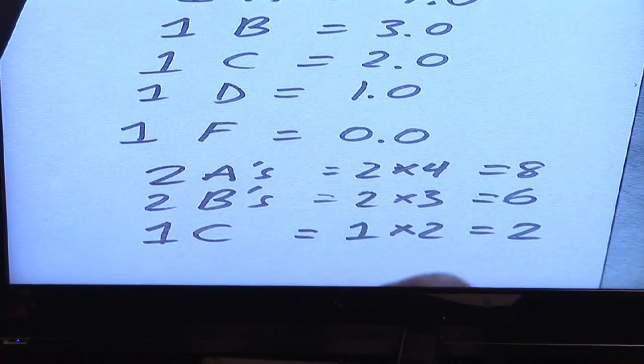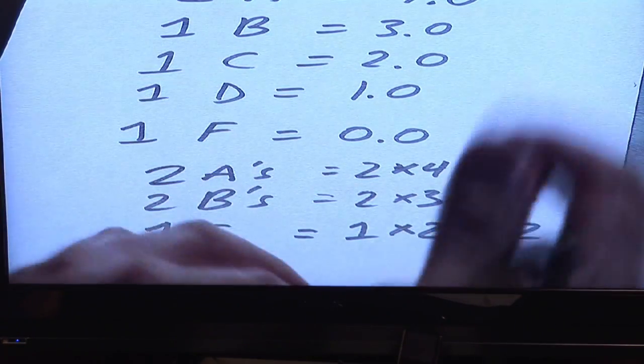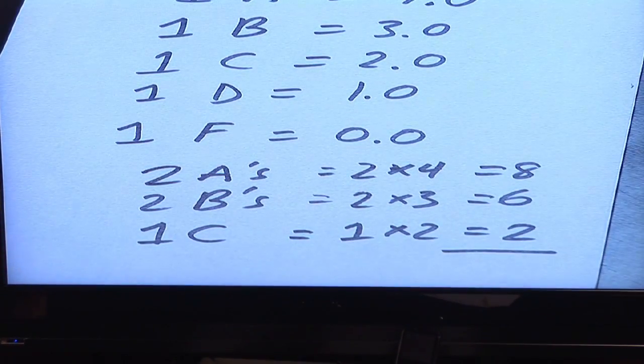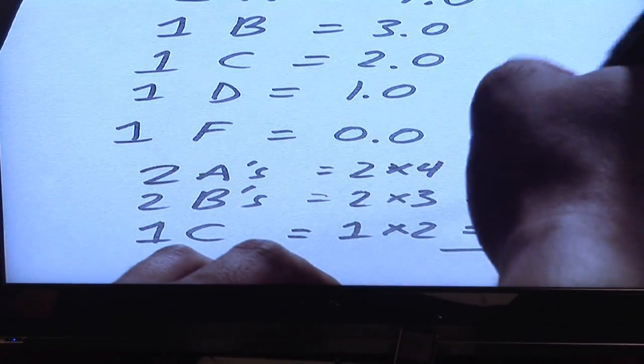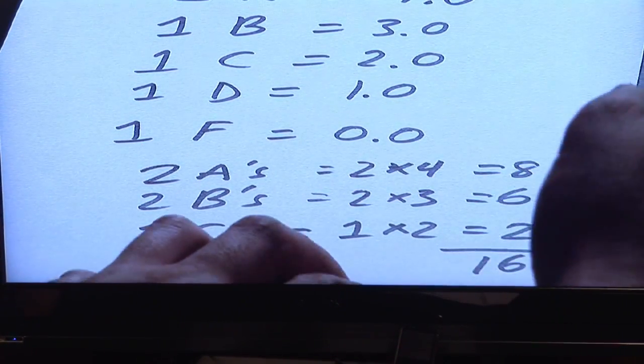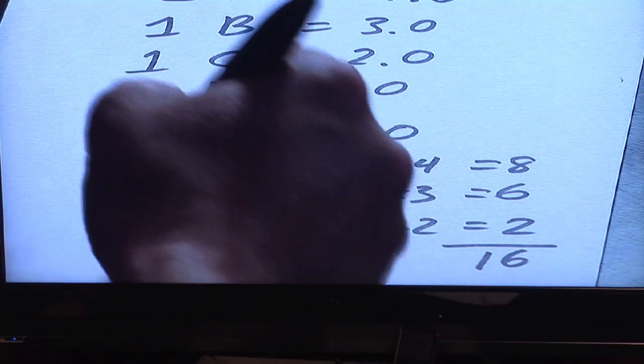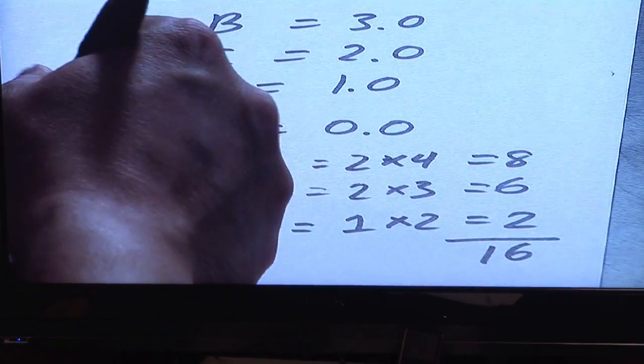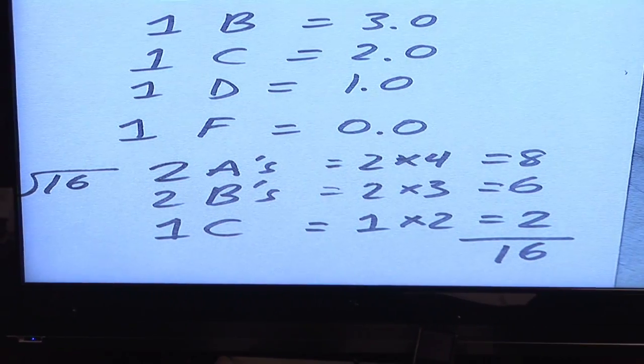Now, once you have that, all you need to do is do two things. Number one, add how many grade points that you have. Eight plus six plus two is going to give you sixteen. And what you're going to do is take the sixteen and divide by how many courses you took.